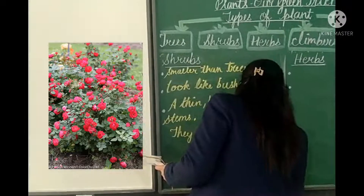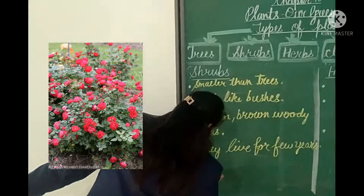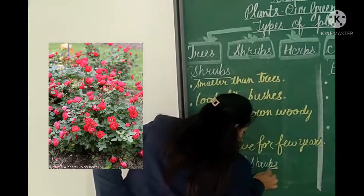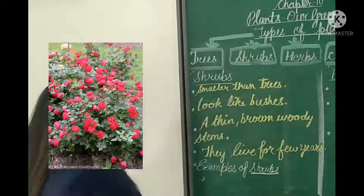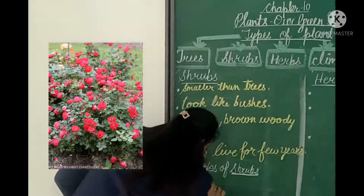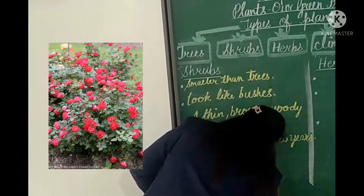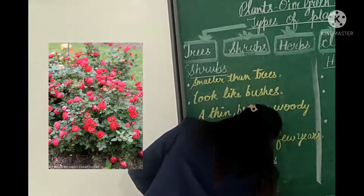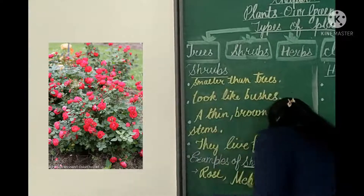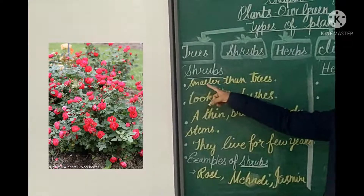Now let's see the examples of shrubs. Examples of shrubs that you can find in your surroundings or at home are rose, henna (mehendi), and jasmine — J-A-S-M-I-N-E. These are examples of shrubs.